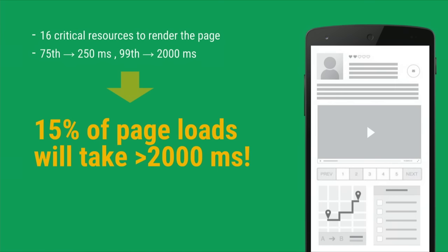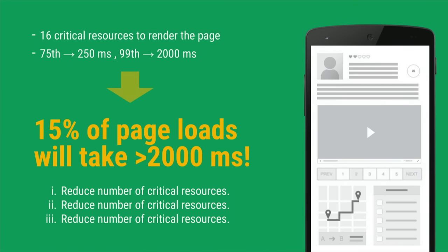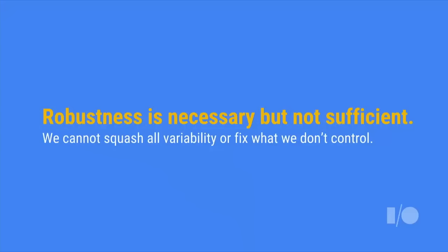So what can we do to fix this? I have three suggestions: reduce the number of critical requests, and then reduce them again, and again. The fewer dependencies you have, the better the odds you won't hit this case. If you take your page from 16 requests down to 5 critical requests, the fail ratio for this same test is about 5% — from one in six page loads to roughly one in 20. Definitely an improvement, but still pretty surprising and not great. We should be able to do better. The interesting takeaway here is that robustness — building a system with high uptime and tight latency bounds — is still not sufficient, because a significant portion of traffic is seeing that 2-second load.